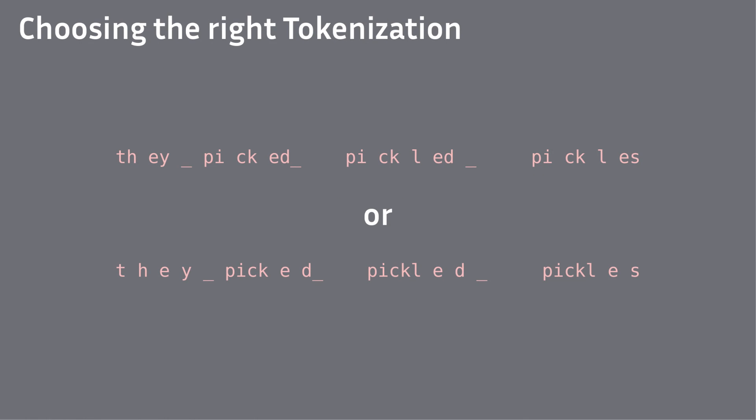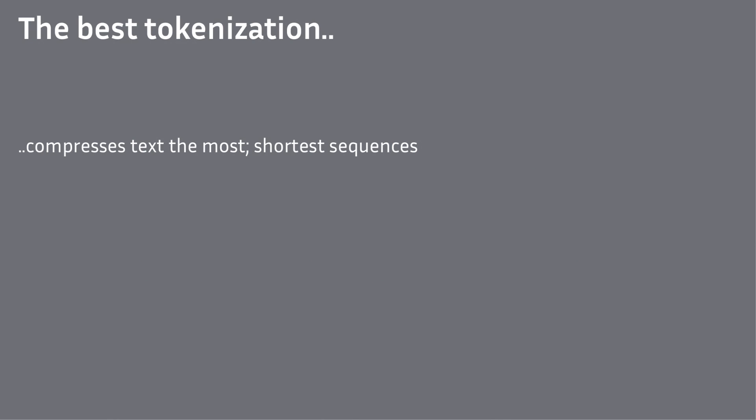Now we learned a lot about BPE, but there are many other tokenization algorithms or tweaks. How do you know which one is the best one for a model? You might say the best tokenization is the one that compresses the most.